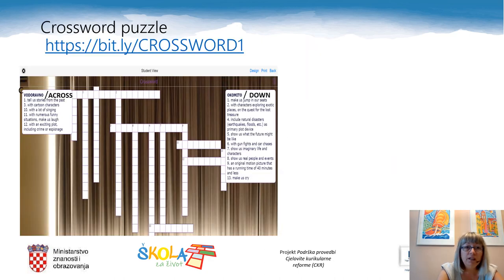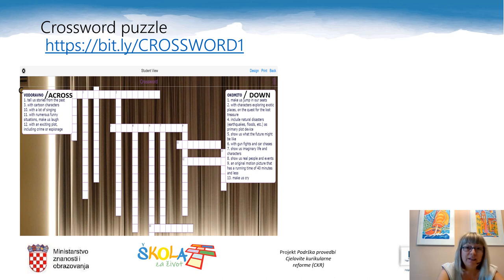The following activity is a crossword puzzle. Read the explanations of the words. They are numbered and put into across and down parts of the puzzle. You can do it online by copying the link bit.ly/crossword1 into a browser, or you can even download it if you wish. Have fun!